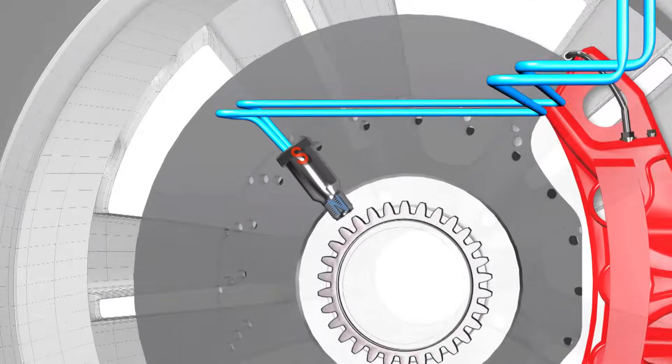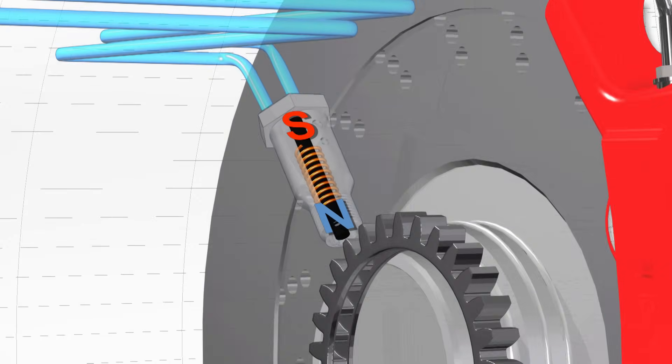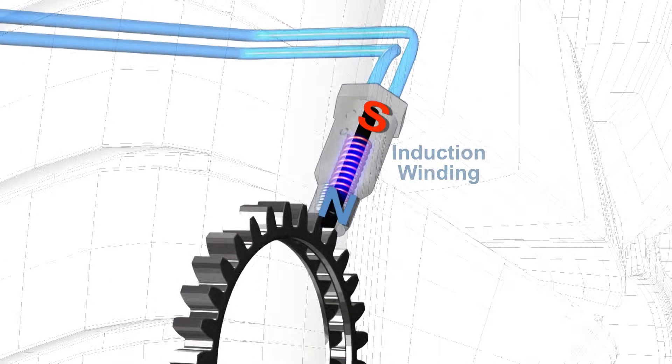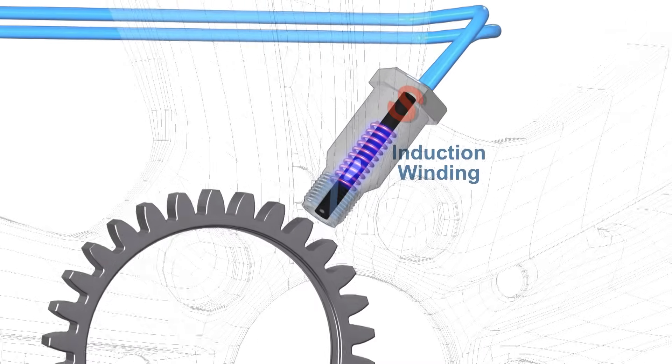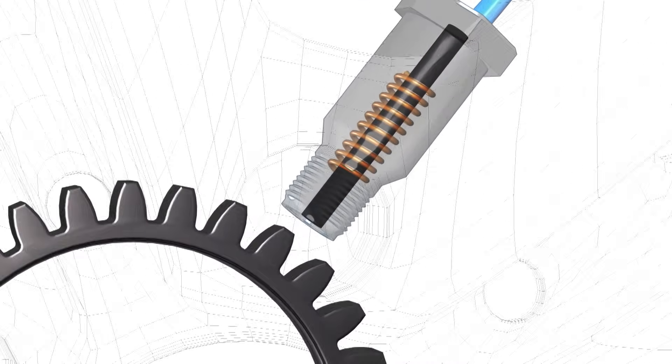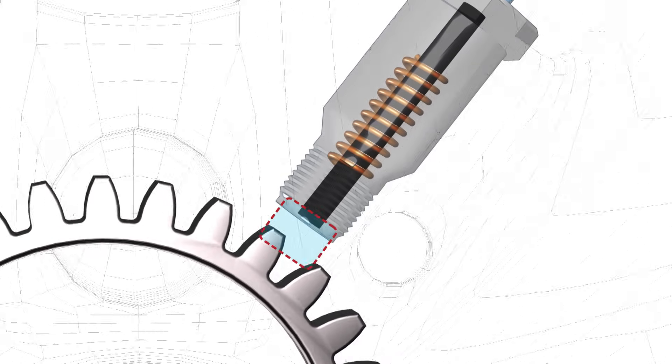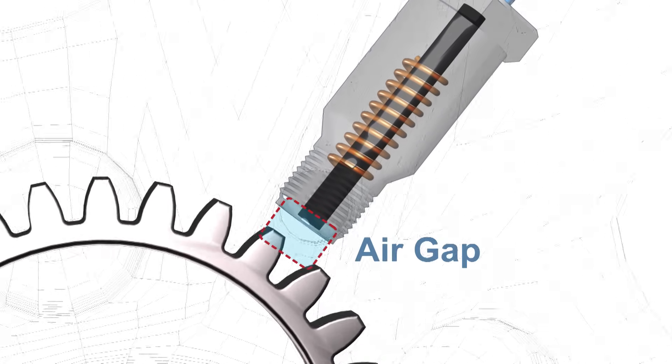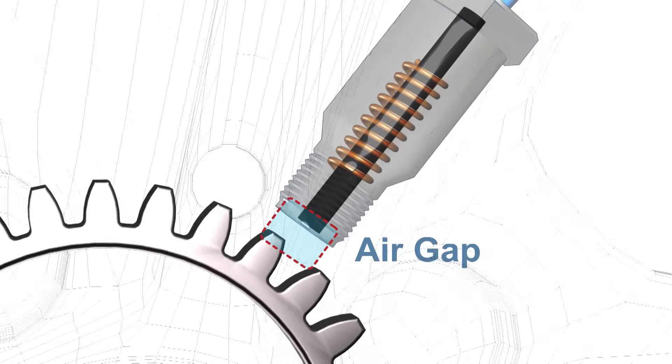The sensor works by using a stator with a central permanent magnet and a soft iron core surrounded by an induction winding. The stator is positioned so that it has a very small clearance or air gap between the stator pole and a toothed rotor or tone wheel.